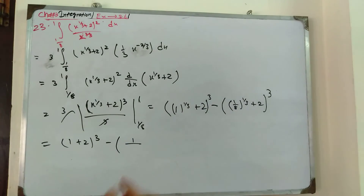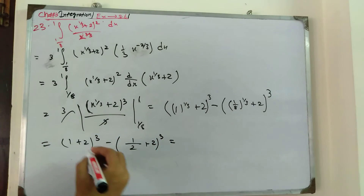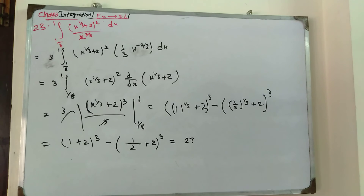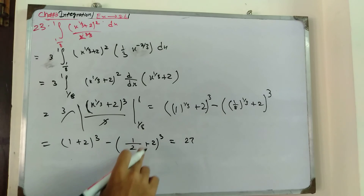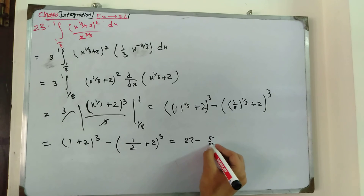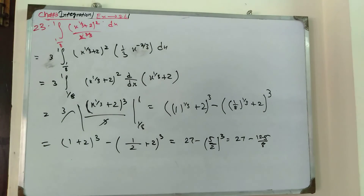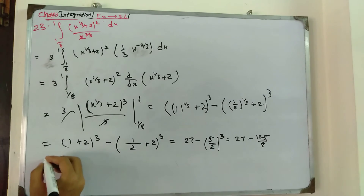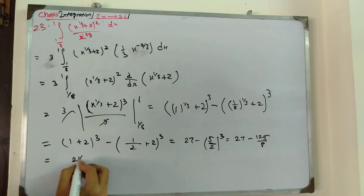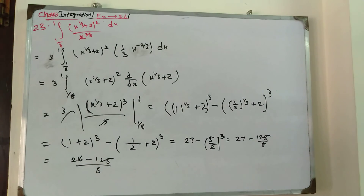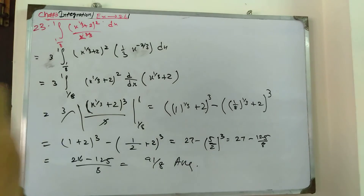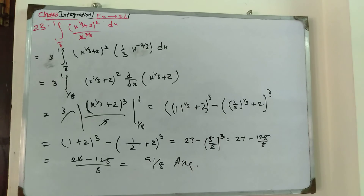Evaluating: at x = 1, x^(1/3) = 1, so (1 + 2)³ = 3³ = 27. At x = 1/8, x^(1/3) = 1/2, so (1/2 + 2)³ = (5/2)³ = 125/8. Therefore the answer is (1/8)(27 − 125/8) = (1/8)(216 − 125)/8 = 91/8. This is your answer. Thank you for watching, may God bless you. Allah Hafiz.